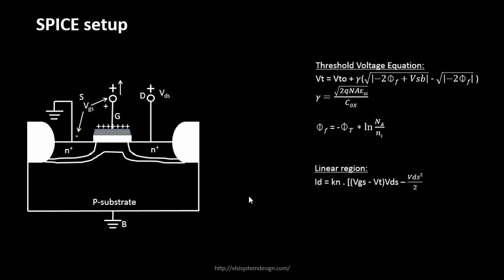We derived the linear region drain current equation. For hand calculations, we ignored the VDS²/2 term because we assumed VDS is so low that VDS²/2 can be approximated to zero. This allowed us to identify that drain current is a linear function of VDS. But now, since the SPICE engine handles this, we can feed more variables for a more accurate approximation of the drain current.